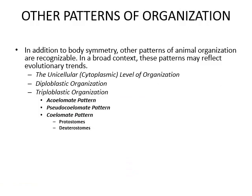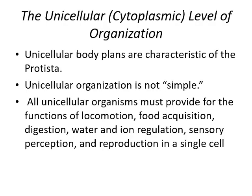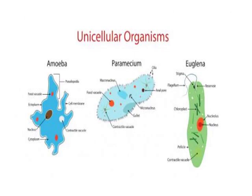Other patterns of organization include layer organization: unicellular, diploblastic, acoelomate, pseudocoelomate, or coelomate. Unicellular organisms have a single cell and all body functions are performed within that single cell — simple locomotion, food, reproduction, water and waste management, excretion, and sensory perception. Examples include Euglena, Paramecium, and Amoeba, where different organelles are present in the single cell and perform very effectively.